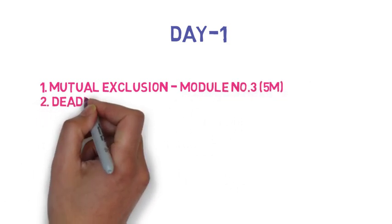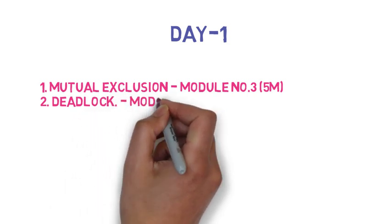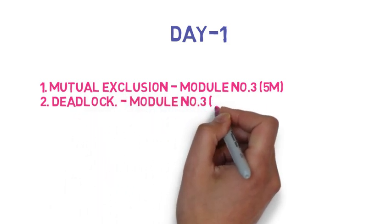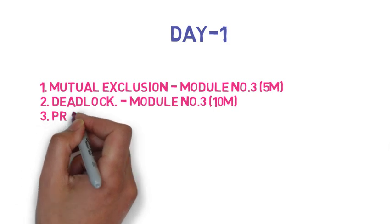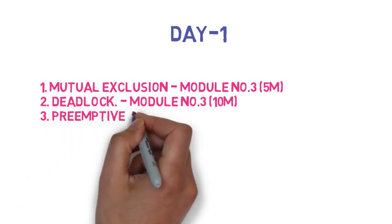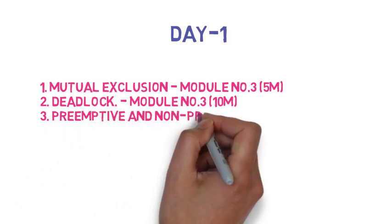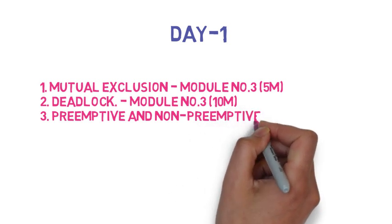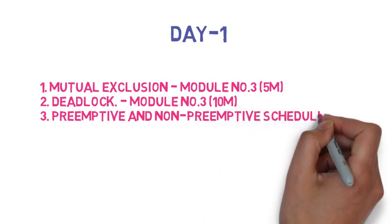The second question is: what is deadlock? Explain the necessary and sufficient conditions for a deadlock. You need to give a briefing on deadlock — which conditions will occur, what the possibilities are, and what conditions lead to a deadlock.